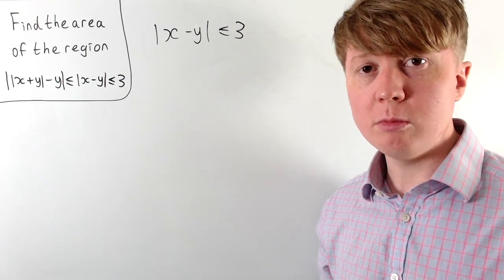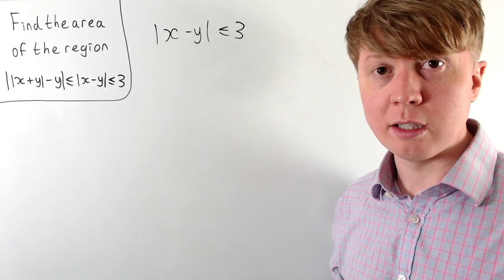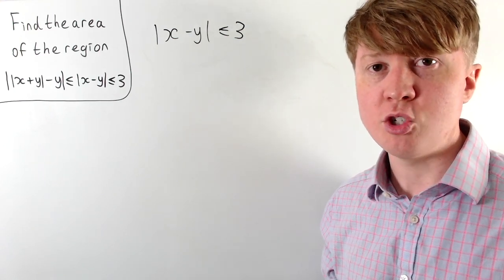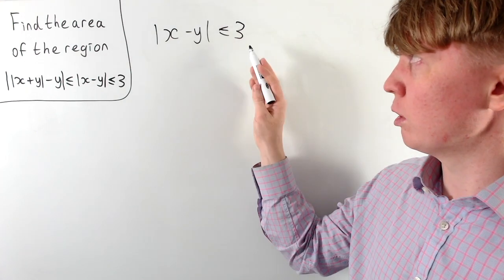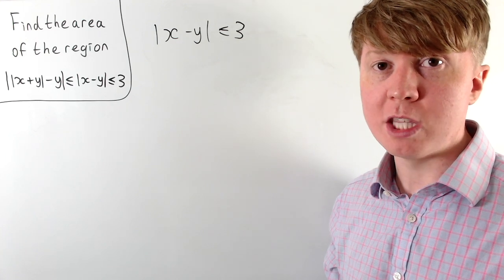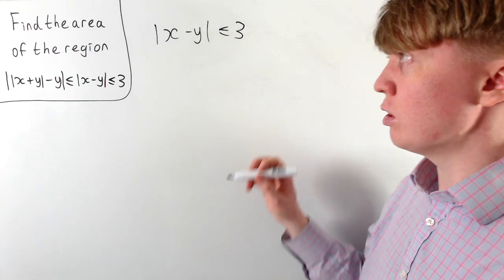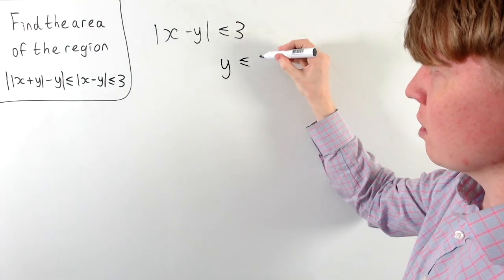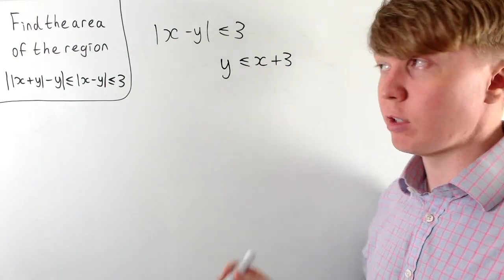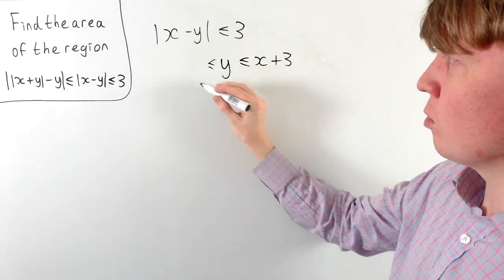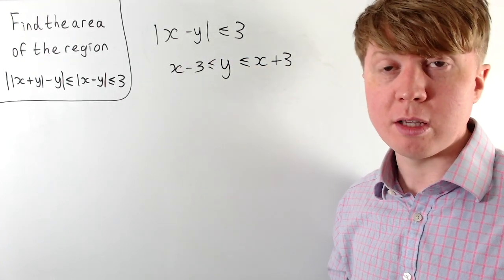Throughout this problem, it's helpful to think of the modulus of the difference between two numbers as telling you the distance between those two numbers. So here, the modulus of x minus y being less than or equal to 3 is saying that x and y have to be within 3 of each other. This tells us that y has to be less than or equal to x plus 3, and also y has to be greater than or equal to x minus 3.